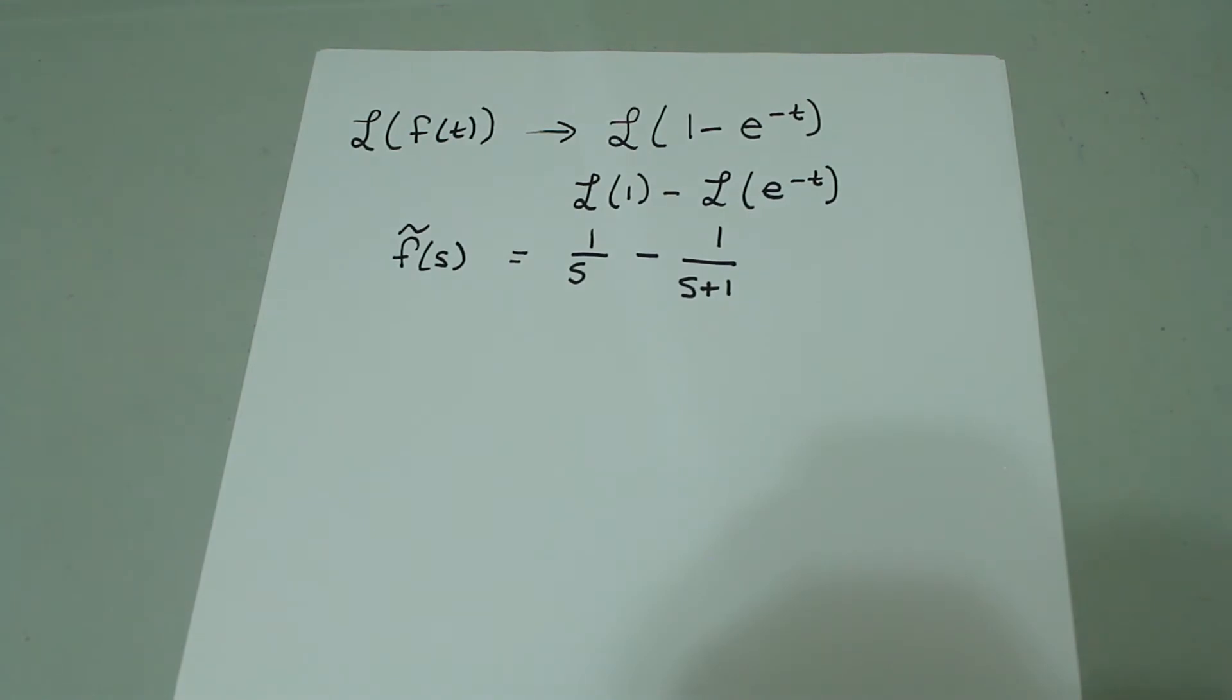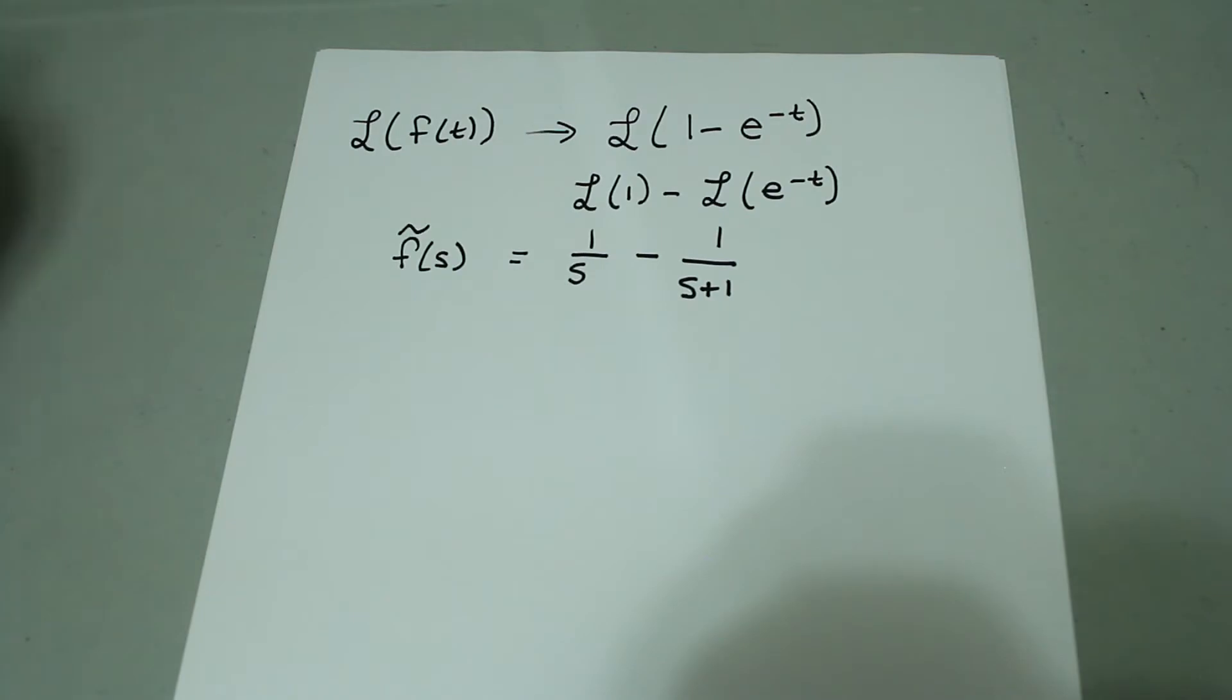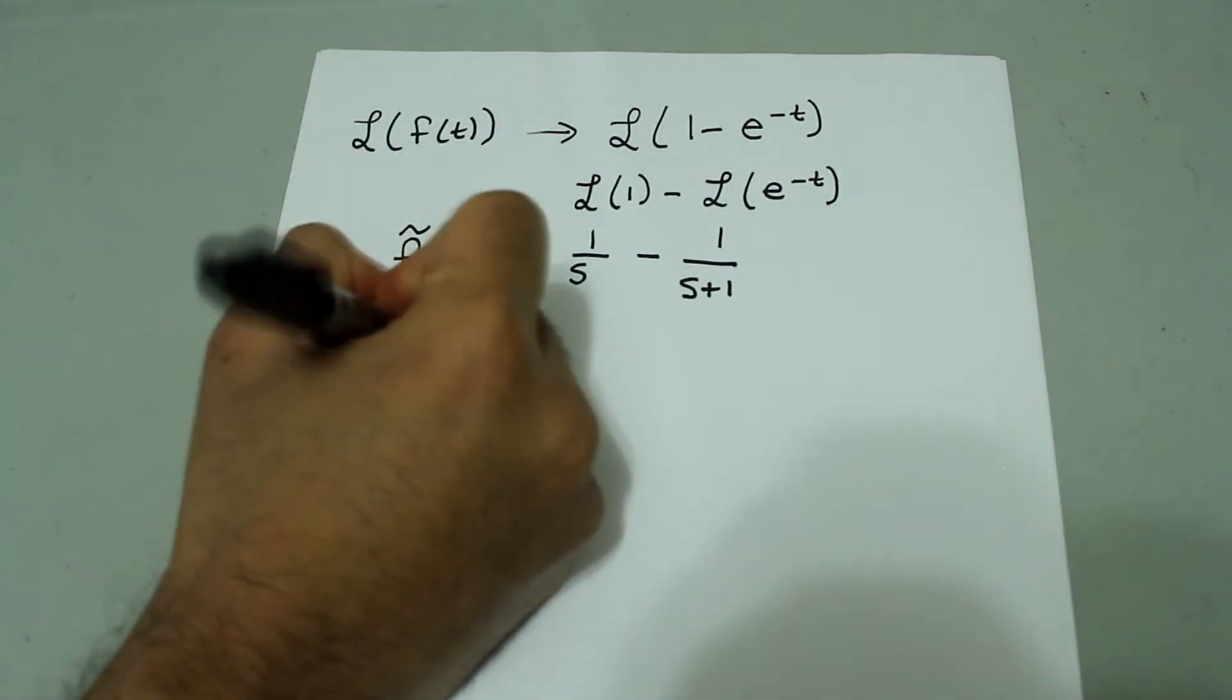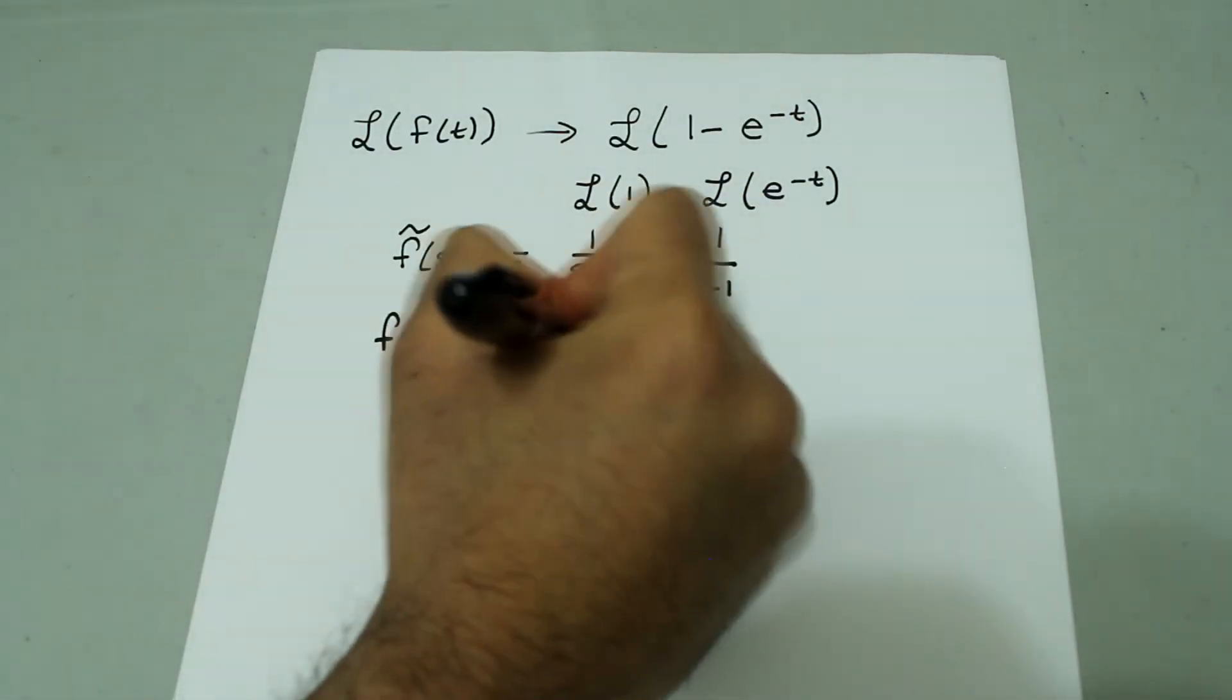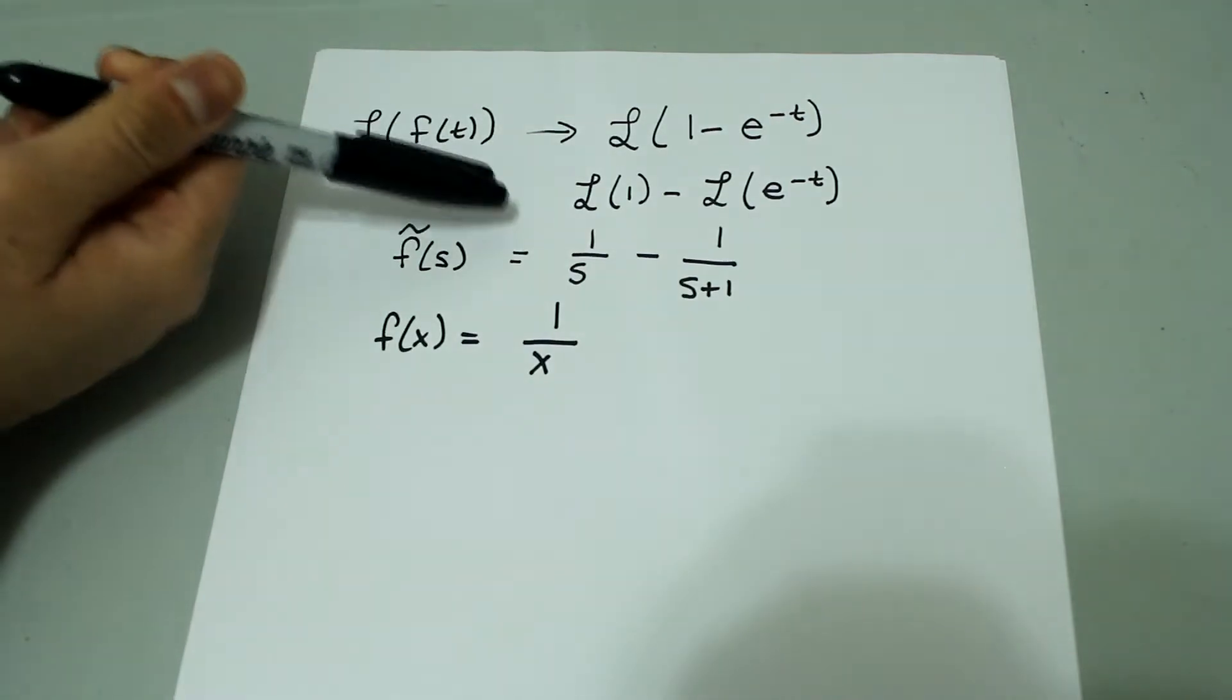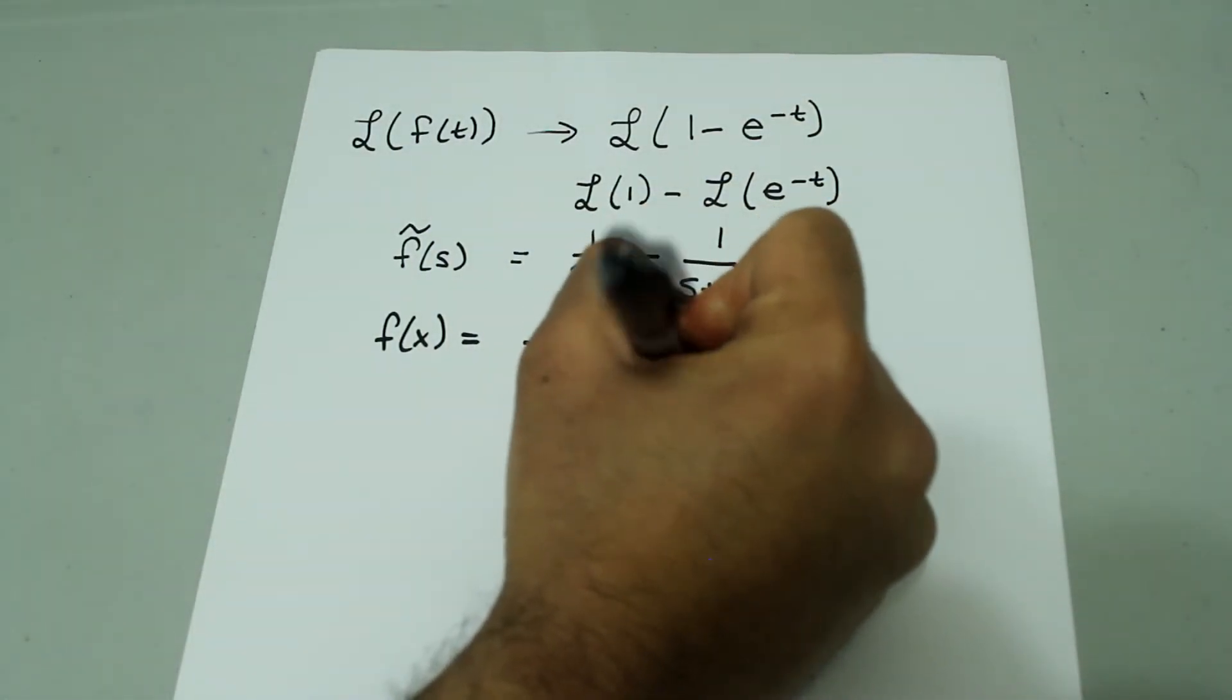Now, we're going to replace this s with any other variable, any other dummy variable other than s. So, I'm going to choose x. So, we're going to say this is f of x. And wherever I see a s, I'm just going to replace that with x. So, we have 1 over x minus 1 over x plus 1.